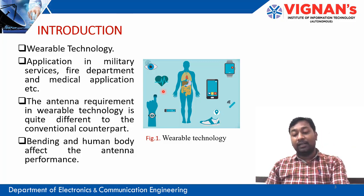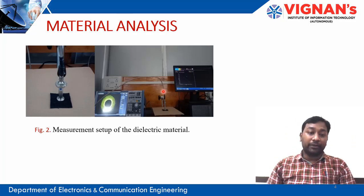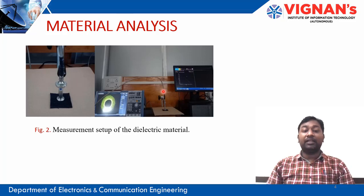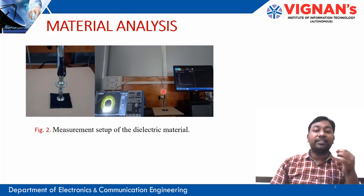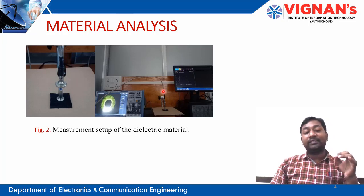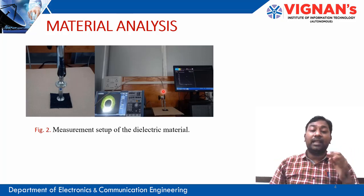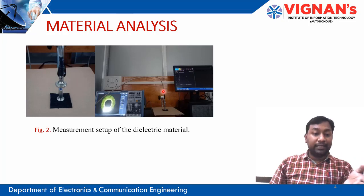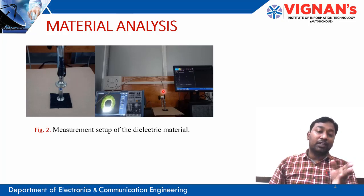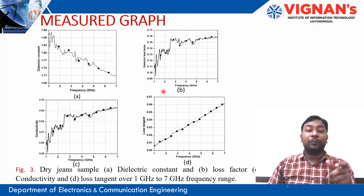First, we design and analyze the substrate material. Material analysis is important because if we don't know the material's behavior, antenna design is not possible. The dielectric permittivity of wearable material differs across products — different jeans materials in the market have different proportions of cotton, resulting in unique properties. We measured our specific jeans material in the measurement setup available in the NIT Silcher instrumentation E&I department.